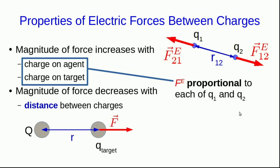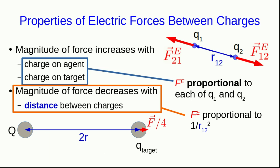Now let's look at how the force depends on distance rather than the amount of charge. Again, it's a difficult experiment to do, but it has been done. If you double the distance between the charges, you find that the force decreases by a factor of 4. This tells you that the electrical force is proportional to 1 over the square of the distance between the charges — or we say that this is an inverse square law.